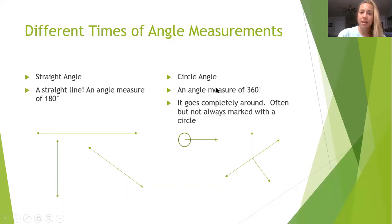Now a circle angle is an angle measured of 360 degrees. That is one complete circle. It goes completely around, so it starts here, goes all the way around to there. It can be marked with a circle, but it's not always marked with a circle.